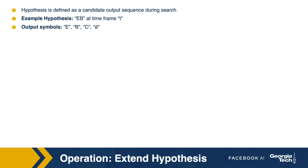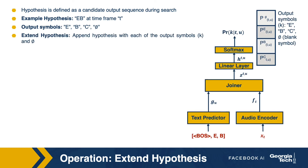Let us now formally define the operation extend hypothesis. Say we have a hypothesis EB at the T-th audio frame, and we want to extend it — in other words, continue decoding with this hypothesis. In order to extend it, we pass the text history of the hypothesis to the text predictor to get a text embedding, and we pass the audio feature at time frame T to the audio encoder to get an audio embedding. After applying the joiner network, linear layer, and softmax, we get a probability distribution over output symbols.